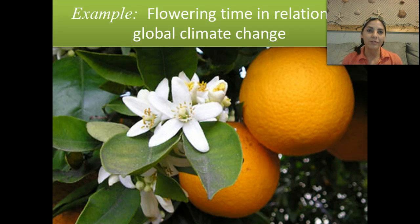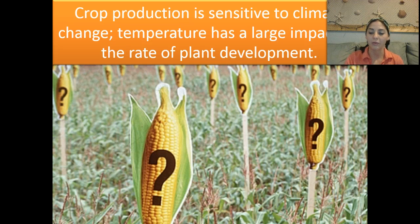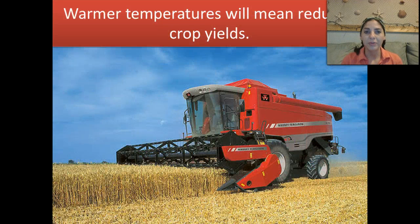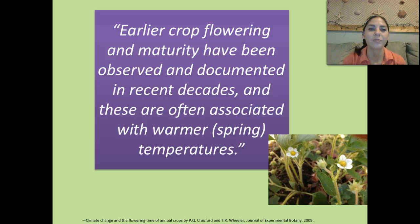An example of the environment changing is flowering time in relation to global climate change. As our global temperature increases, it's going to affect the flowering of plants. Crop production is very sensitive to climate change, and the increase in temperature has a huge impact on the rate of plant development. Warmer temperatures mean reduced crop yield — basically all plants flower really early and don't do as well. Earlier crop flowering and maturity have been observed and documented in recent decades, often associated with warmer spring temperatures.